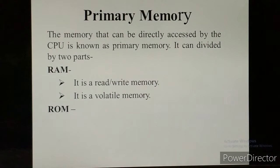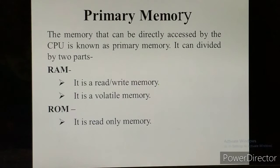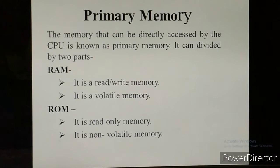The second part of primary memory is ROM. The full form of ROM is Read-Only Memory. It stores data and information permanently. The programs stored on ROM are written when the computer is manufactured. ROM is a non-volatile memory, which means the data present inside the ROM is not affected whether the power is on or off.